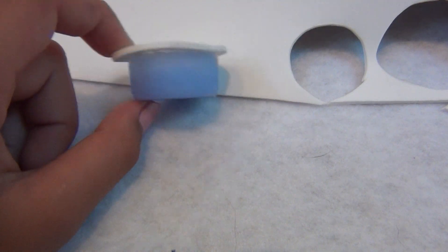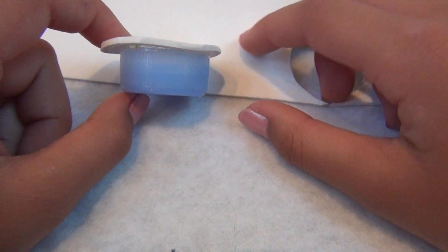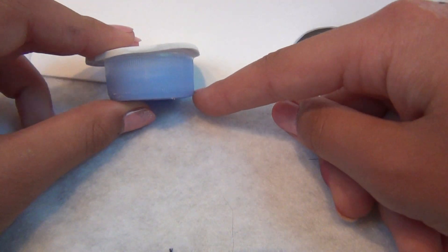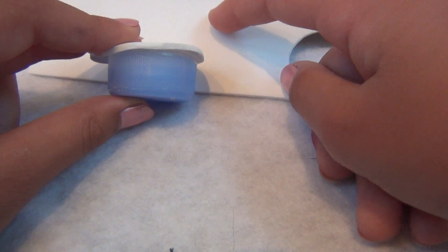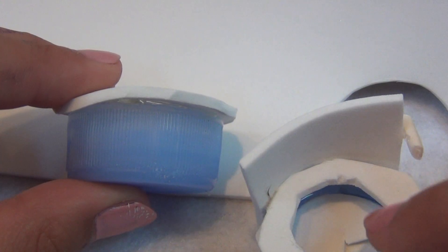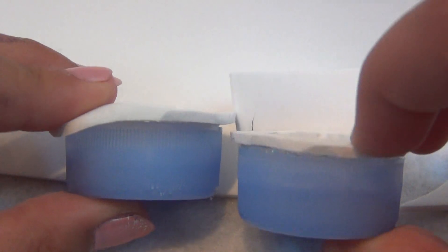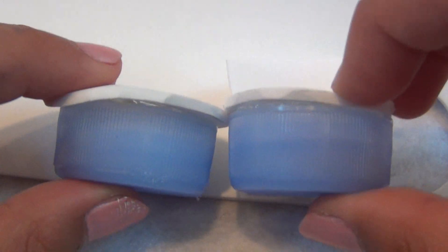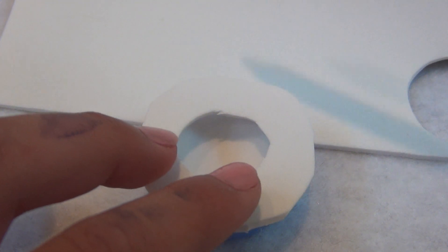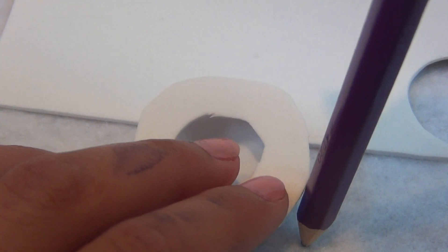Now, take your foam and measure out how tall you want the back of your toilet to be. Remember that you should be measuring from the bottom of your toilet all the way up to the desired height. I'm using my first toilet as a little example.